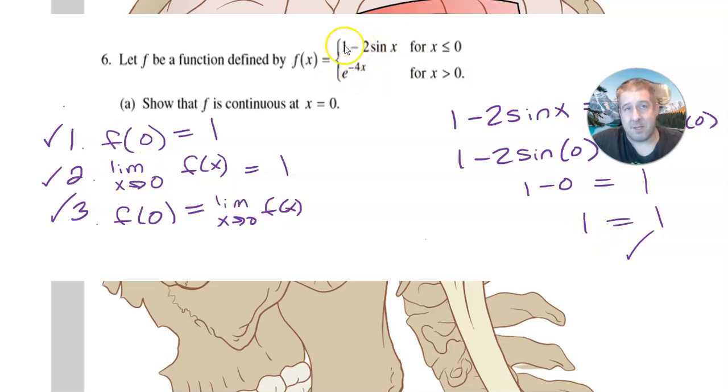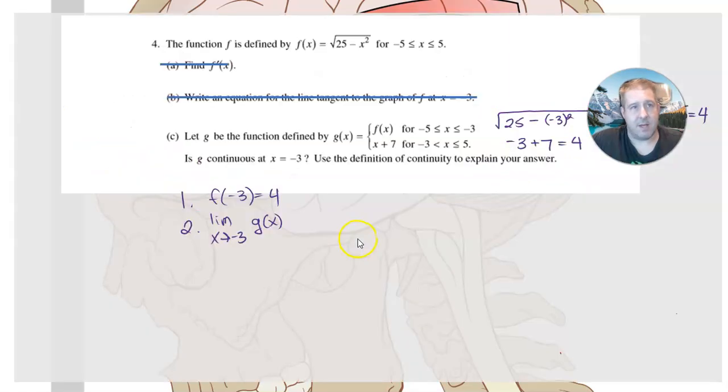Does the limit of this, okay, left side approaches 0. What about right side? Negative 4 times 0 is 0. E to the 0th power is also 1. Yes, they both approach a height of 1. So therefore, number 3 must also be true. If the left and the right sides both approach the same height, and it happens to be the same as the clearly defined point, then yes, this is continuous. And there's my reasoning for that.